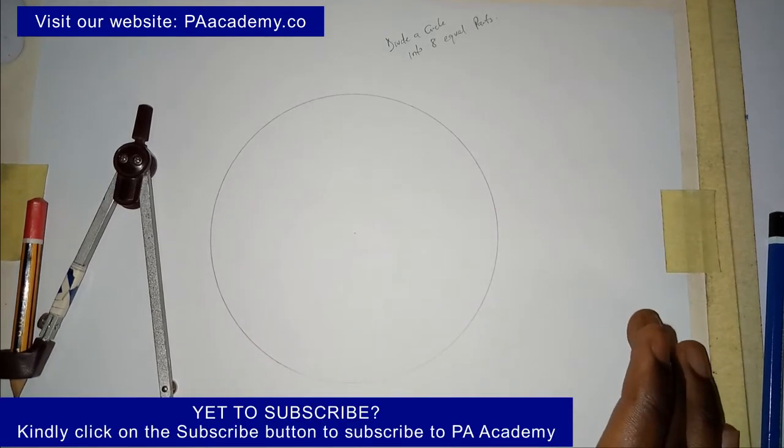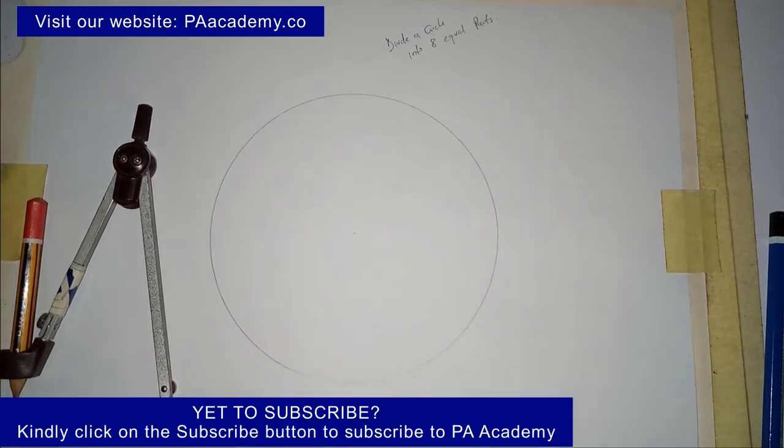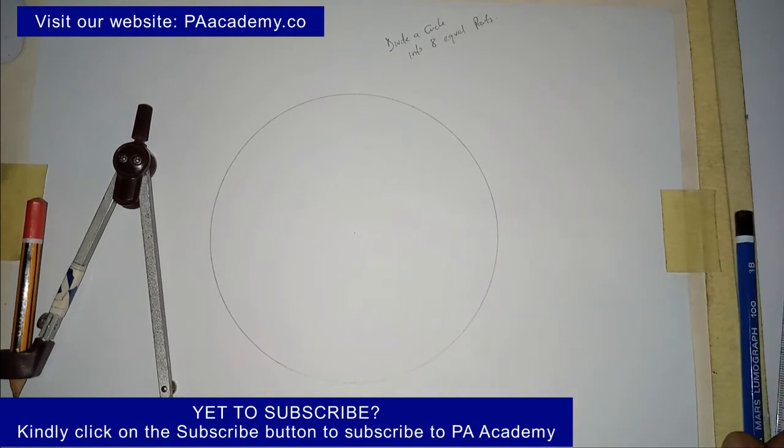Now we already have our circle that we are going to be dividing into eight equal parts. It is important to know that irrespective of the radius of the circle that you are working with, the steps you are going to be using in this video are still the same.